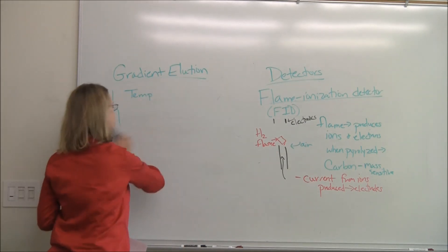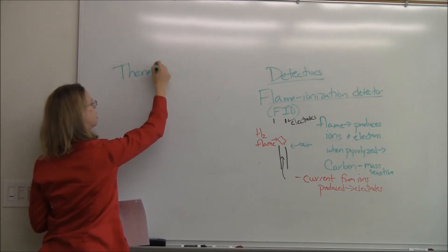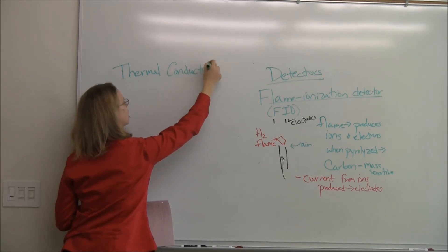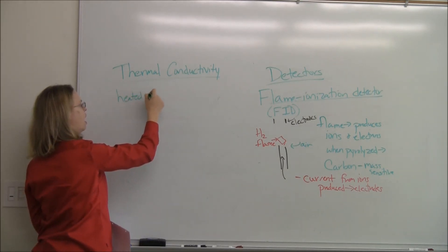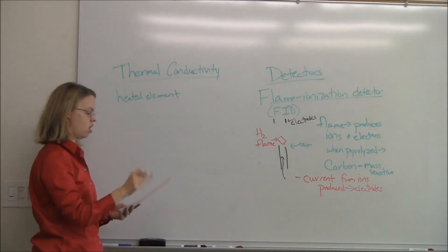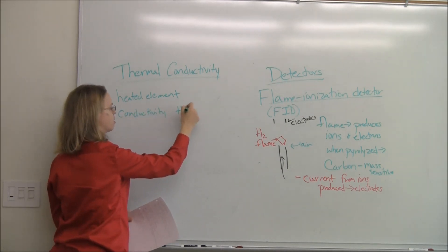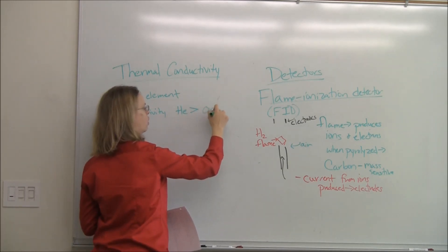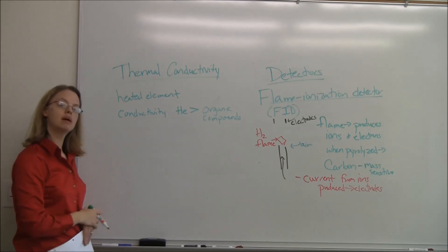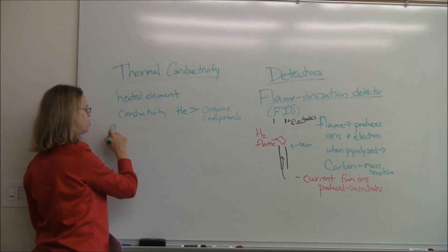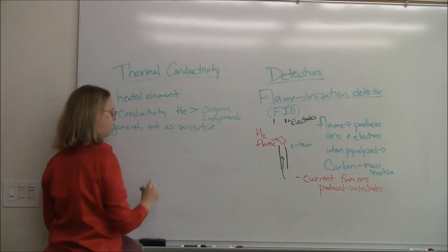There are other types of detectors that you could use. Back in organic lab, I think that you used the GC with thermal conductivity. In this one, you have a heated element. As your sample goes along, the conductivity of helium, your carrier gas, is much greater than any of your organic compounds. So you'll have a high conductivity. When a compound comes out, the conductivity will go down. This one is a general detector, but it's not as sensitive. If you want the most sensitive detector out there, you're not going to choose the conductivity.